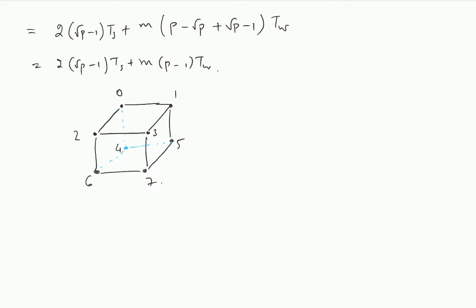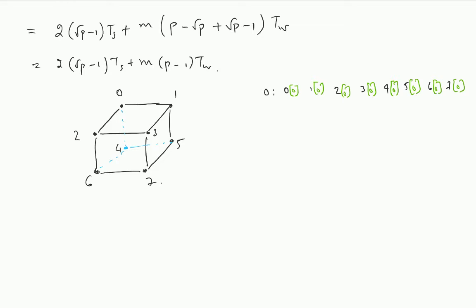Just to be clear on the notation, on node 0 I will have the data 0, 1, 2, 3, 4, 5, 6, and 7. And to be clear which element I am talking about, I am going to label this with 0. This is the 0th element on the 0th node — this index is which element and this index is which node this element originally belonged to.